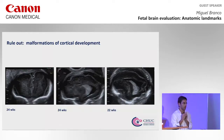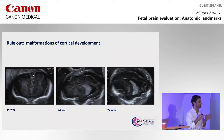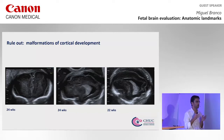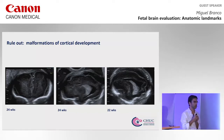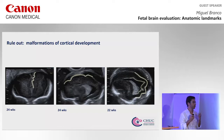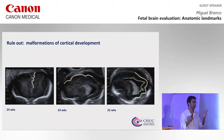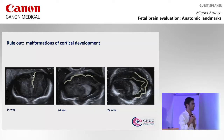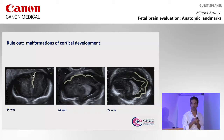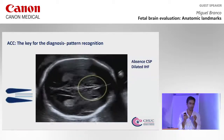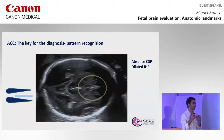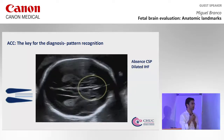Agenesis of the corpus callosum — complete or incomplete — is associated with malformations of cortical development. In these three cases, we can see that there are premature sulci both in the internal aspect of the cortex, the superior aspect, and the posterior aspect of the cortex, and that is associated with poor prognosis. Bear in mind that the key for screening is pattern recognition on the axial plane.